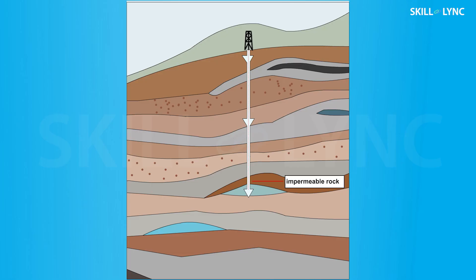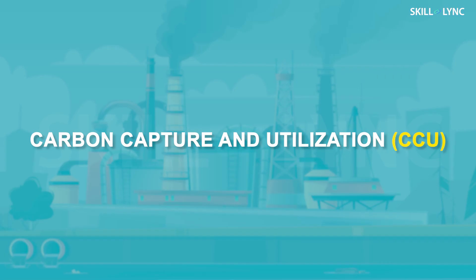The underground reservoirs can be depleted sources of oil and natural gas and are kilometers below the surface. Due to the high pressure at such depths and the impermeable rock layer, the gas stays in liquid form.